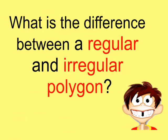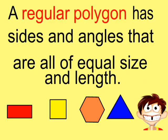Well, what's the difference between a regular and an irregular polygon? A regular polygon has sides and angles that are all of equal size and length. These three are all regular polygons. All their sides and angles are congruent.